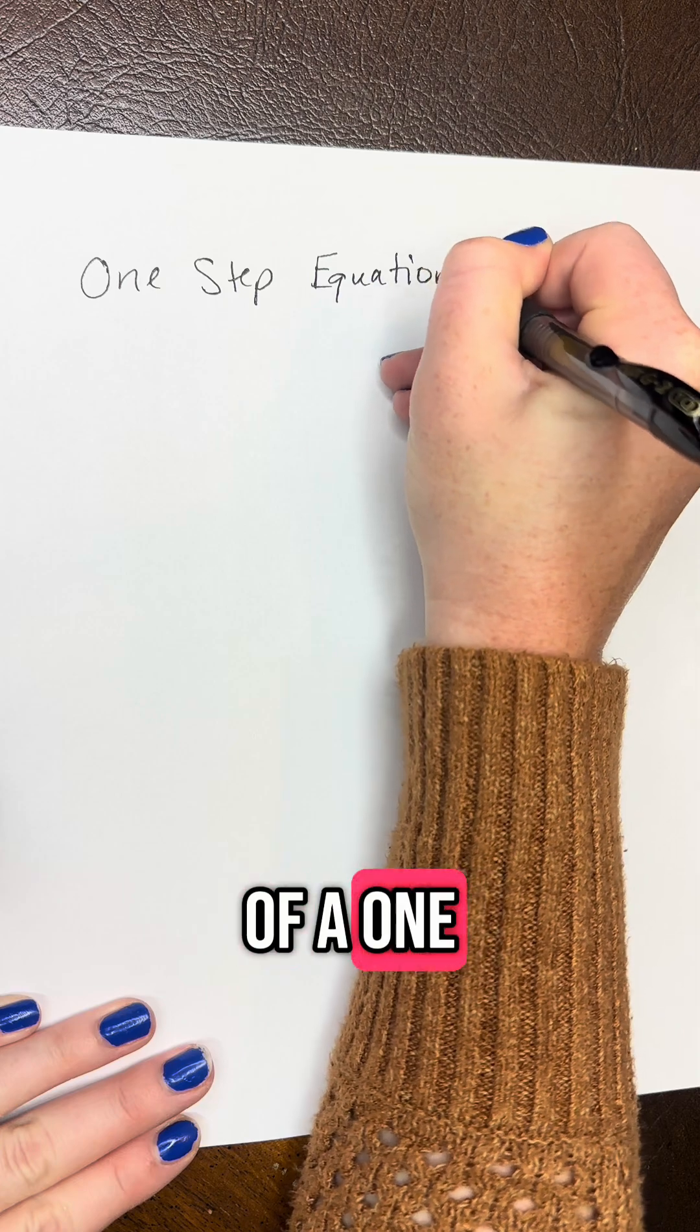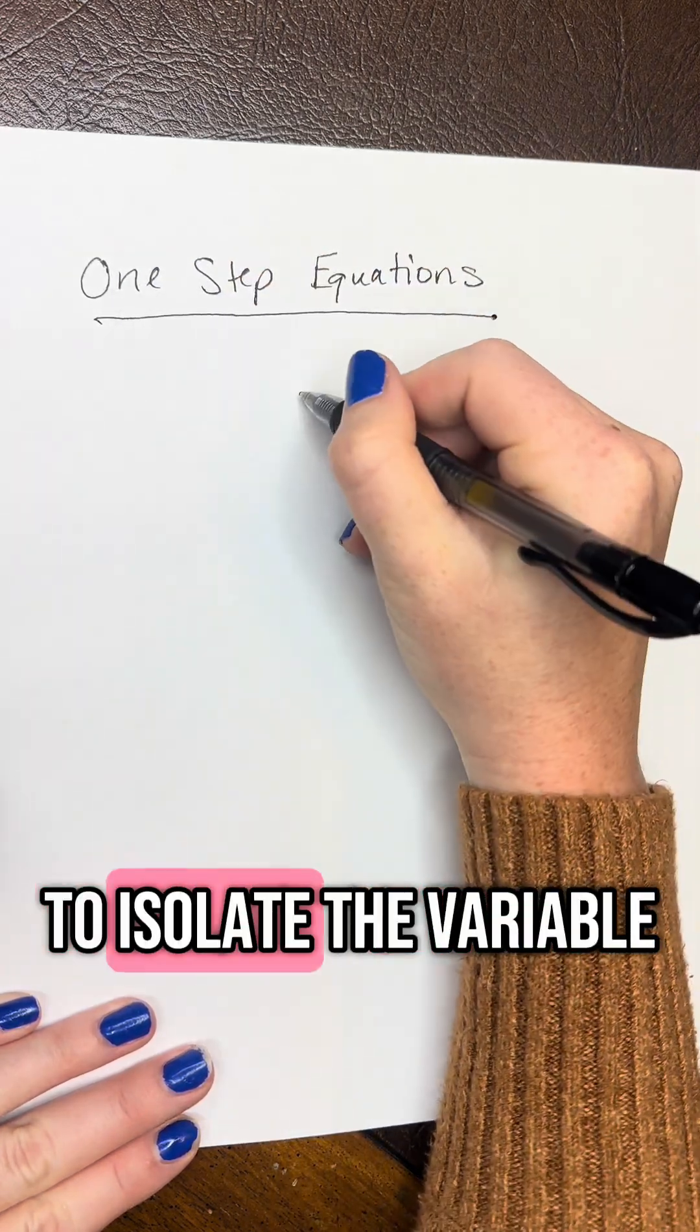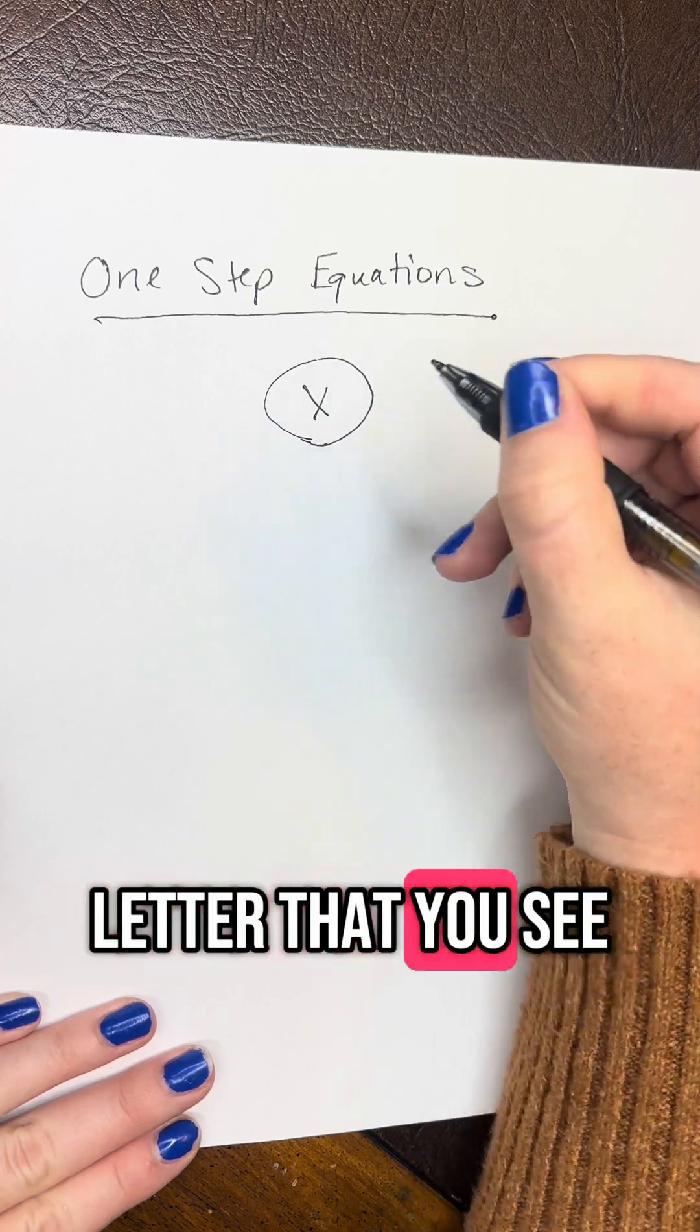So the goal of a one-step equation is that you want to isolate the variable, which is the letter that you see.